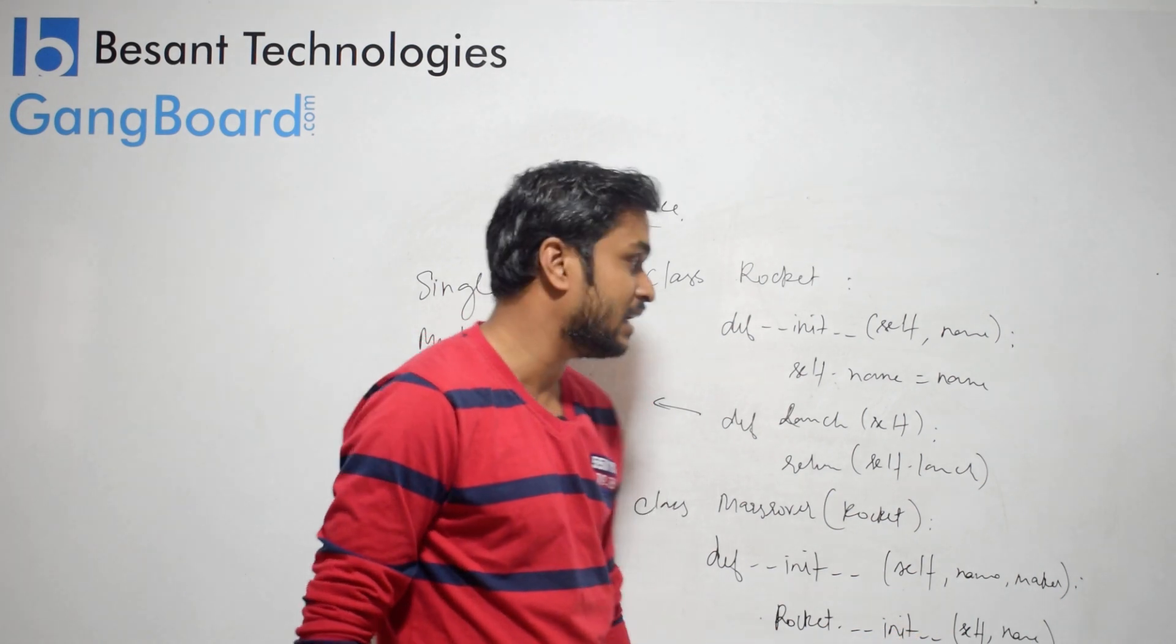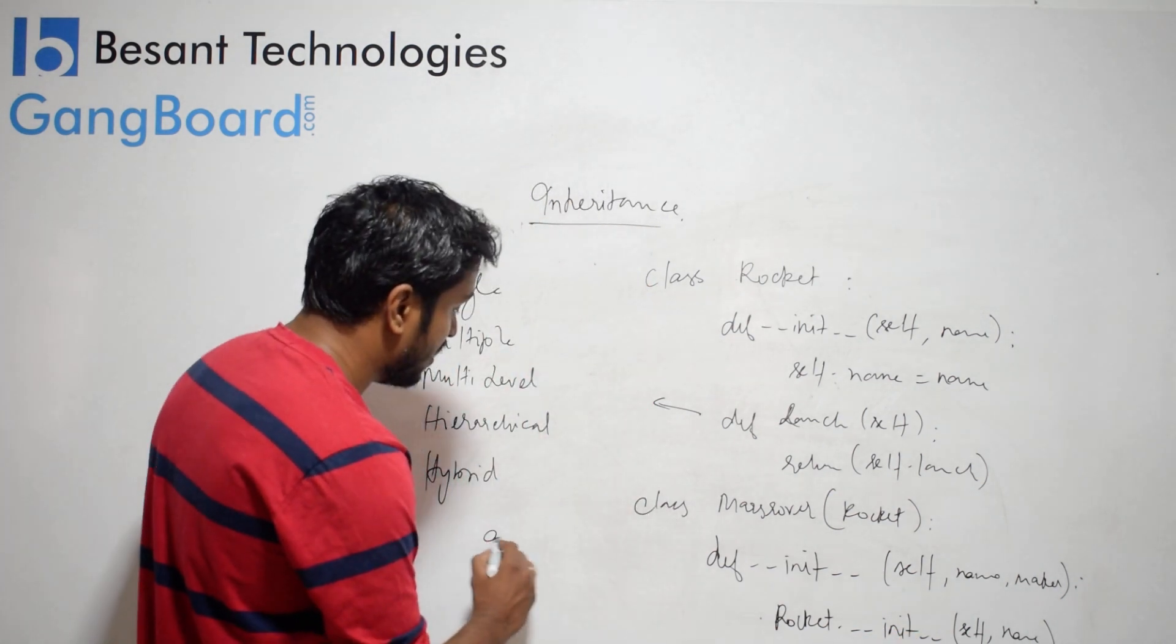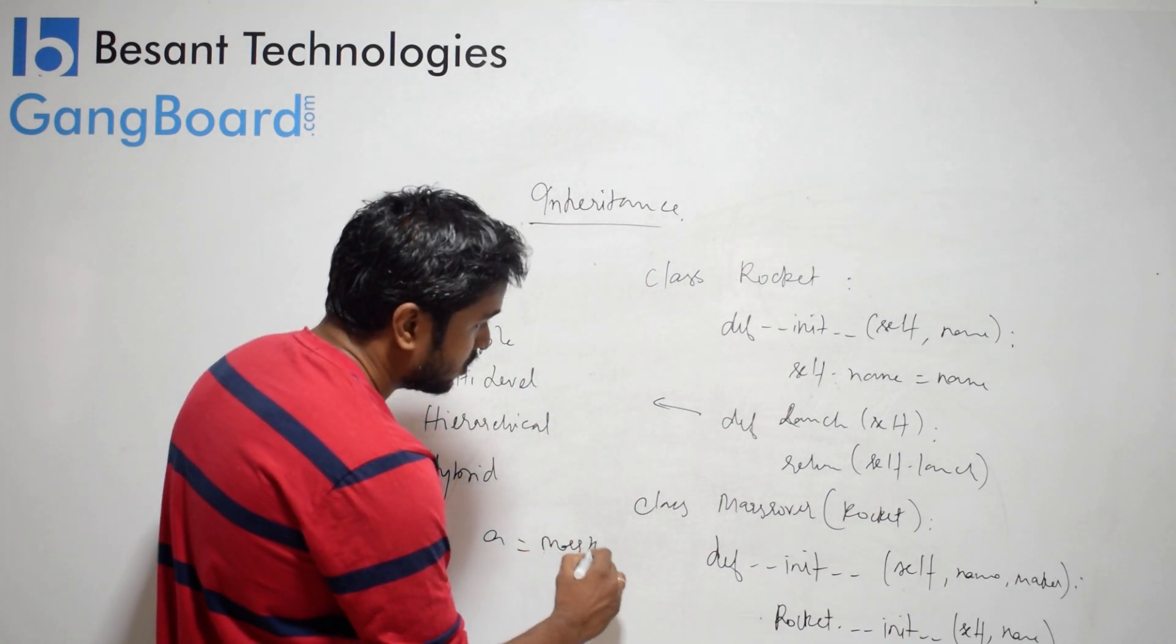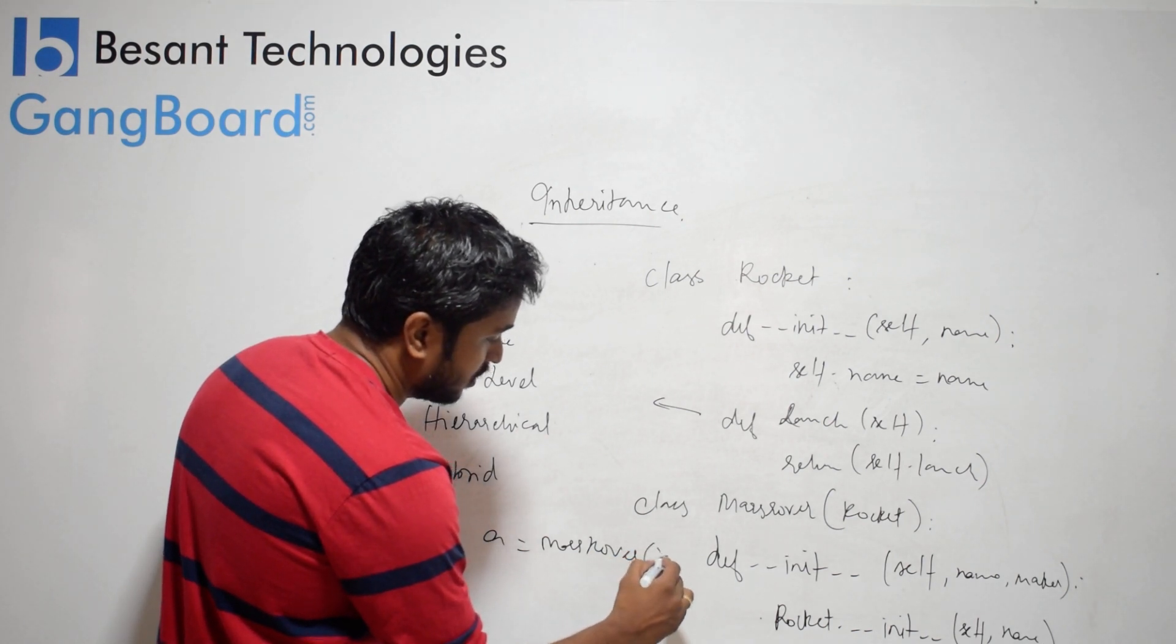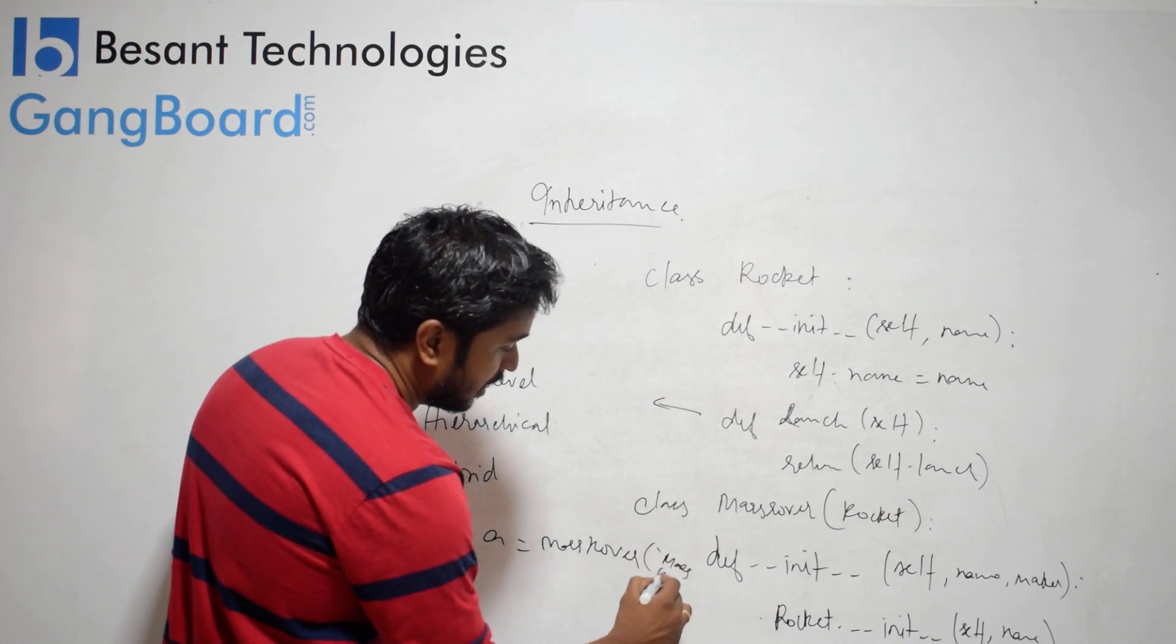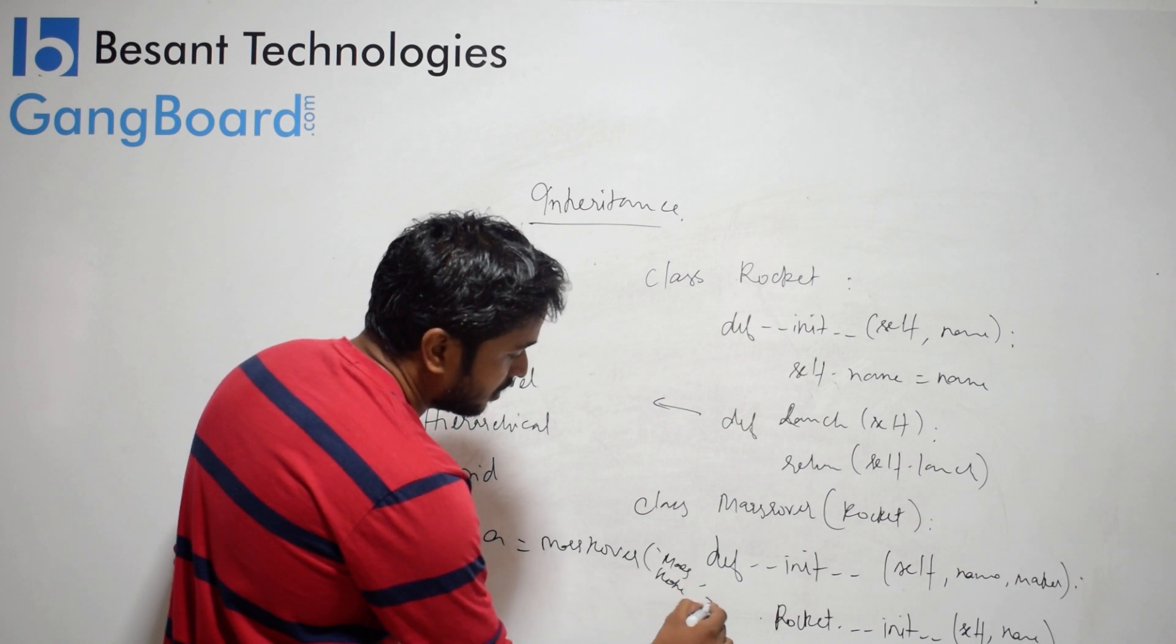Which is a new argument. In this class, I will assign it. So a equals MarsRover, the name is mars rocket, and the maker is ROW.